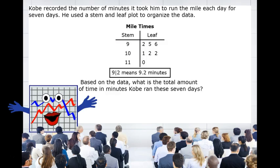Let's check this one out. Kobe recorded the number of minutes it took him to run the mile each day for 7 days. He used a stem and leaf plot to organize the data. Based on the data, what is the total amount of time in minutes Kobe ran these 7 days? Let's take a look at the key.